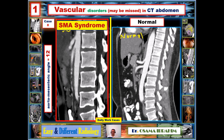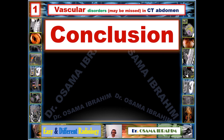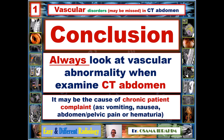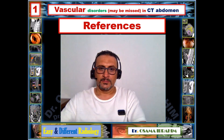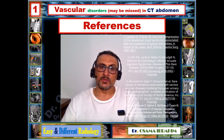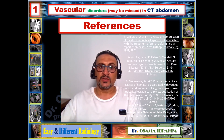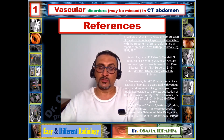In conclusion, always look for vascular abnormalities when examining CT abdomen — they may be the cause of chronic patient symptoms such as vomiting, nausea, abdominal or pelvic pain, or hematuria. Don't miss these findings. I hope I have provided clear knowledge about this topic. Thank you for your attention. Wait for me next Sunday for a new presentation on Radiology Energy. Thank you very much and goodbye.